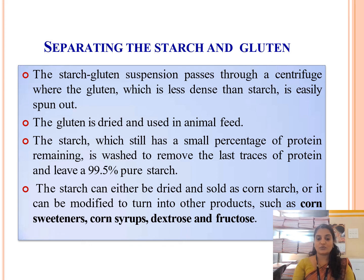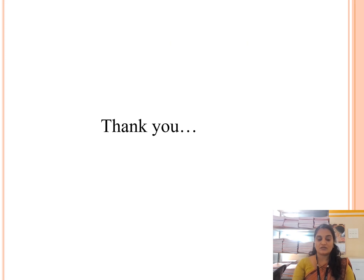The starch can either be dried and sold as corn starch, or it can be modified and turned into other value-added products like corn sweeteners, corn syrup, and fructose. Thank you. I hope all of you understand the dry and wet milling process.